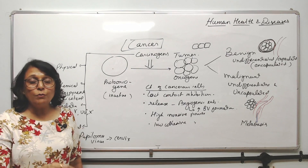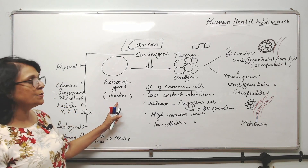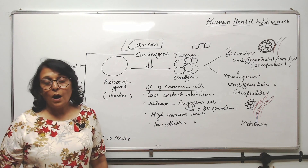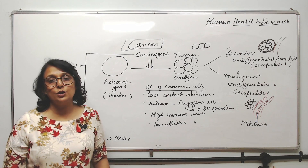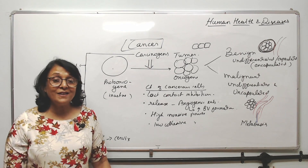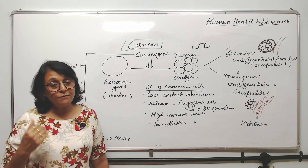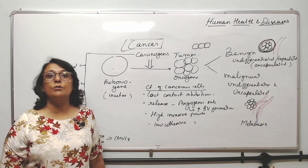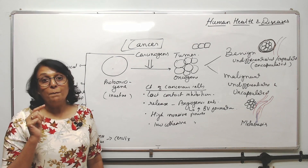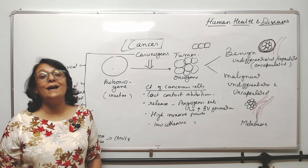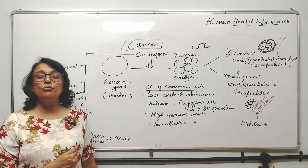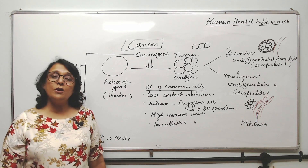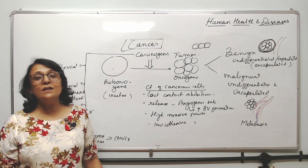What a carcinogen does is convert the proto-oncogene into an oncogene. When this happens is unpredictable — a person may get cancer after smoking a few cigarettes, or may never get cancer despite smoking. A person who never smokes can also get cancer. However, those who smoke or chew tobacco are at a higher risk compared to those who do not.